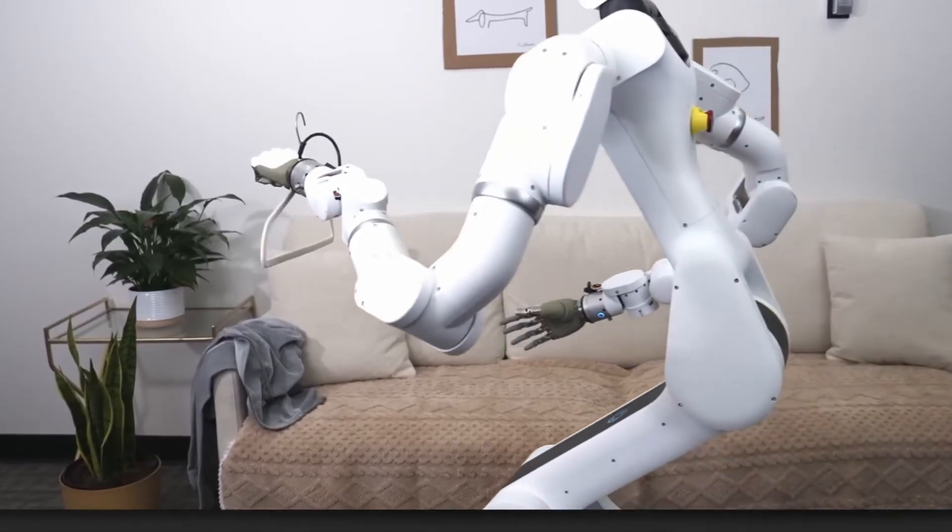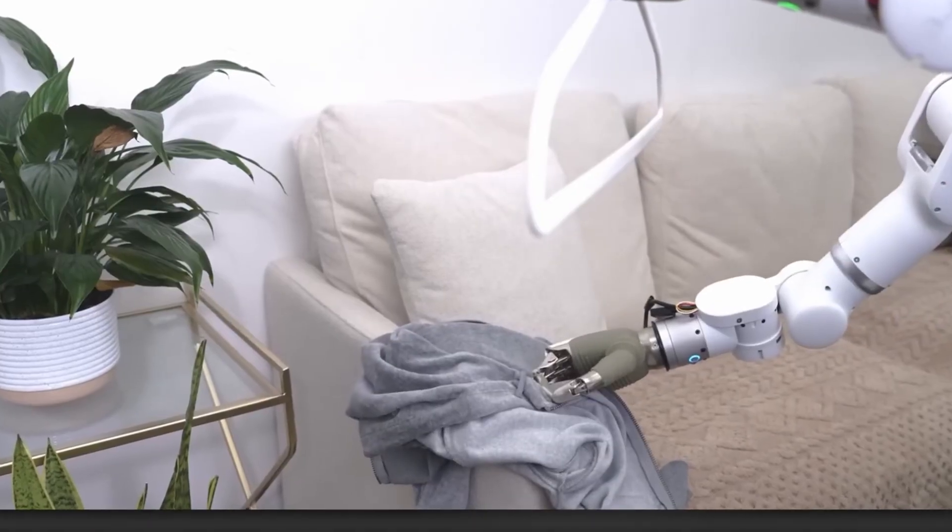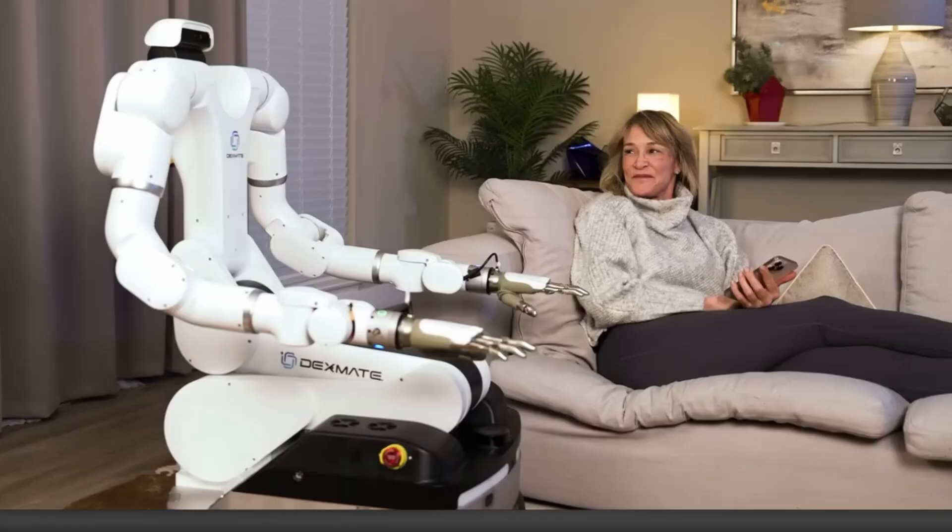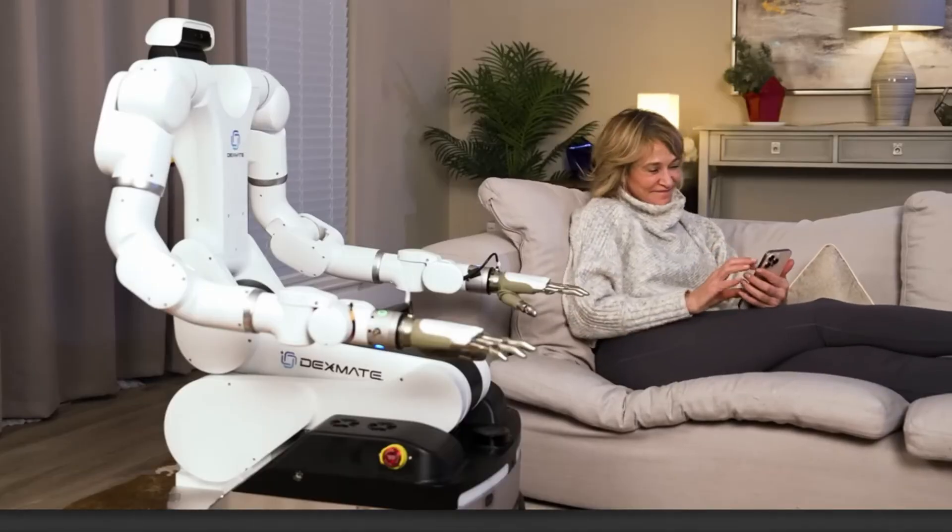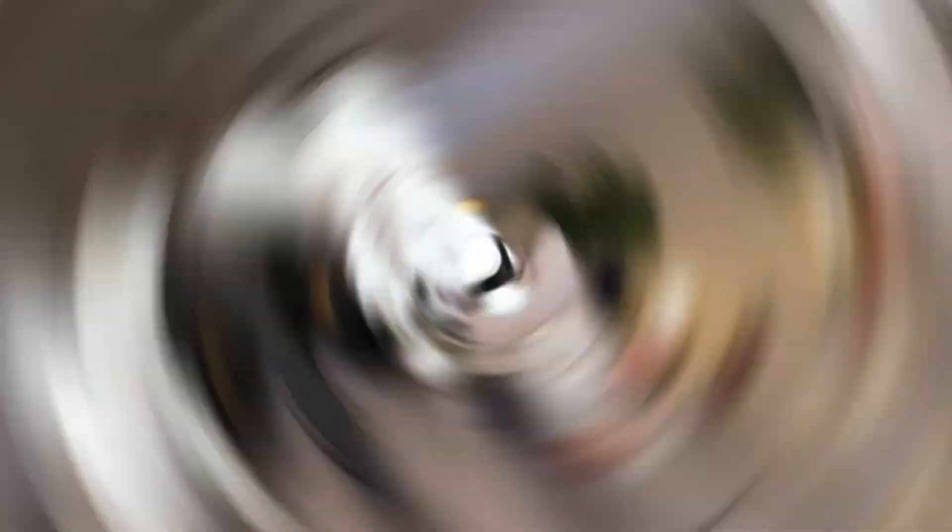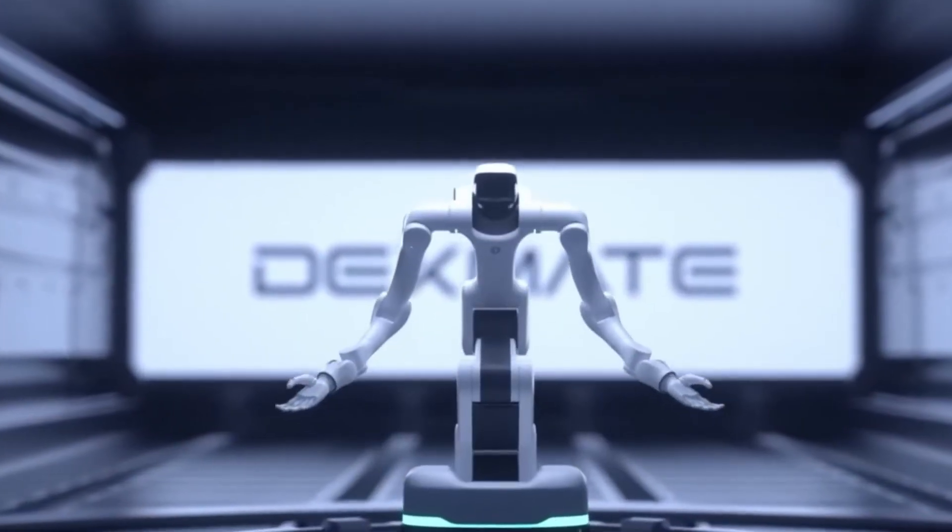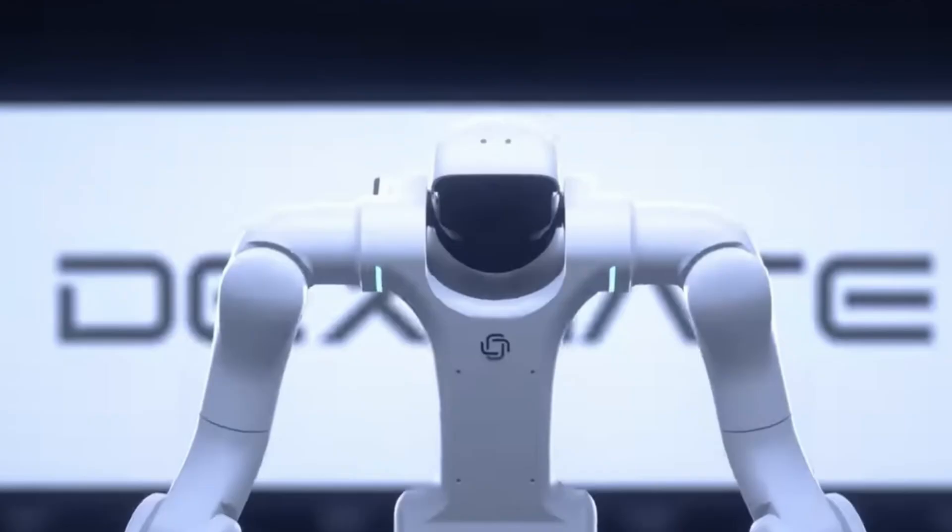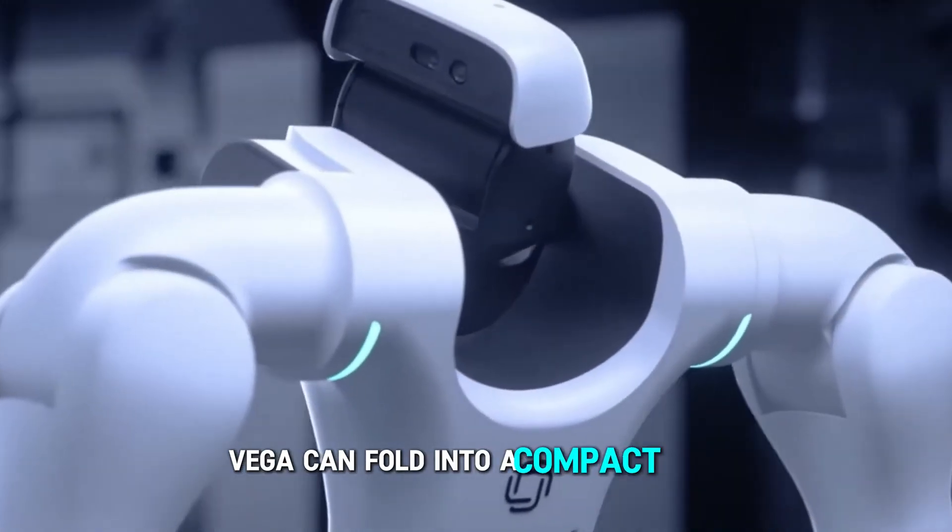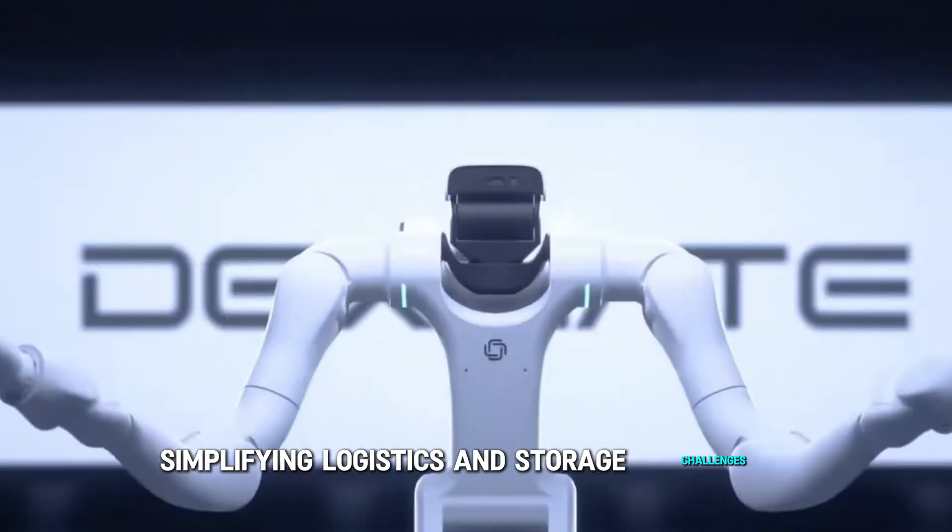Vega's ability to extend up to 2.2 meters enables it to reach elevated areas, enhancing its utility in settings such as construction sites or large industrial facilities. Moreover, when not in use or when needing to be transported, Vega can fold into a compact form, simplifying logistics and storage challenges.